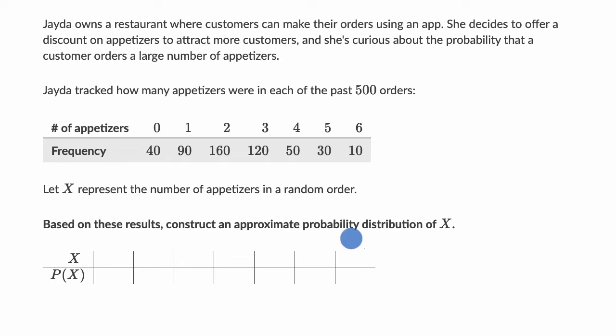All right, so they're telling us an approximate probability distribution because we don't know the actual probability. We can't get into people's minds and figure out the probability that their neurons fire in exactly the right way to order appetizers, but what we can do is look at past results, empirical data right over here, to approximate the distribution.